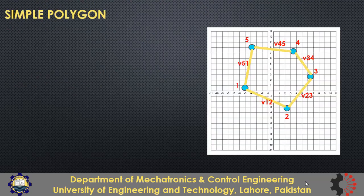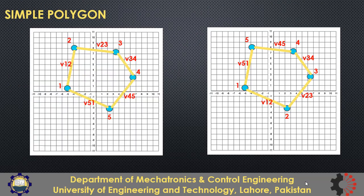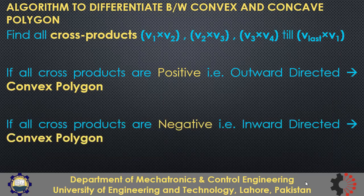Consider another scenario: the difference is the order of vertices. On the left polygon the order is clockwise, while on the right it is anticlockwise. If you repeat the cross product procedure for the clockwise polygon, all cross products result in vectors directed into the plane — all negative. So we update the rule: if all cross products are positive or all are negative, the polygon is convex. Checking this method on a concave polygon will yield both positive and negative cross products.